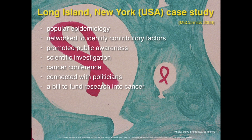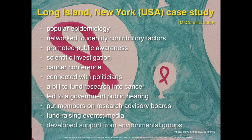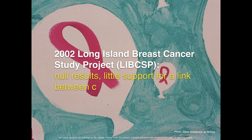They ensured that they had supportive members on research advisory boards, held regular fundraising events, and constantly engaged with the media. Overall, they worked in a very networked way, creating new interactions between activists, sufferers, researchers, health and environmental scientists, politicians, policymakers, and funders. In 2002, despite all their work — the networking, the popular epidemiology, and the citizen science alliances — a study showed that there was very little evidence of the link between chemicals in the environment and breast cancer.